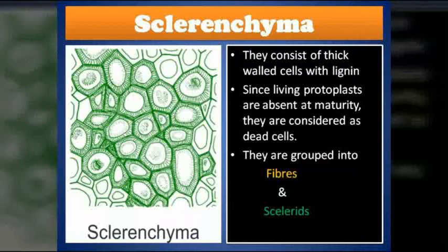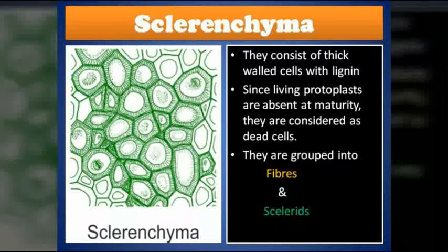Sclerenchyma tissues are thick-walled cells containing lignin, a special substance present in the walls of sclerenchyma tissues. Since sclerenchyma tissues do not have protoplasts at maturity, they are considered dead cells. Among the three types of simple permanent tissues — parenchyma, collenchyma, and sclerenchyma — sclerenchyma tissues are dead cells due to the absence of protoplasts at maturity.